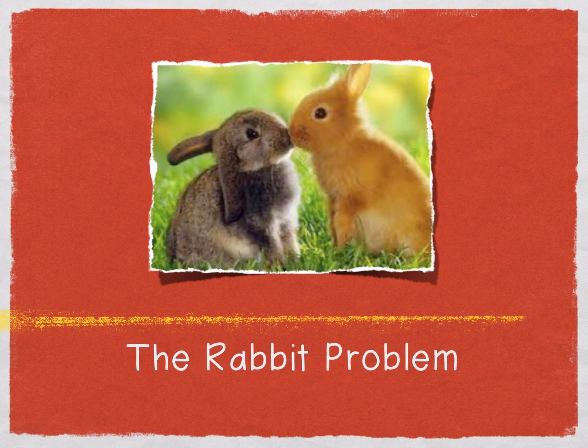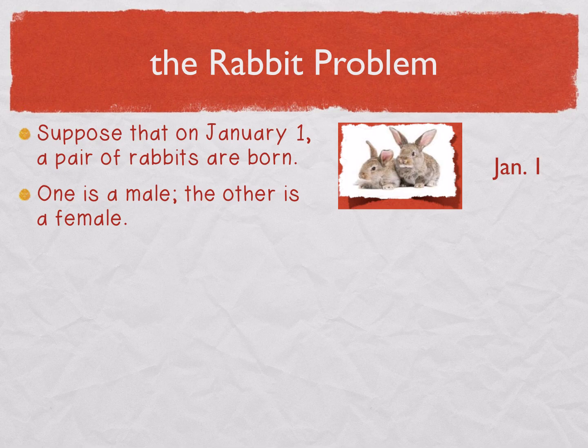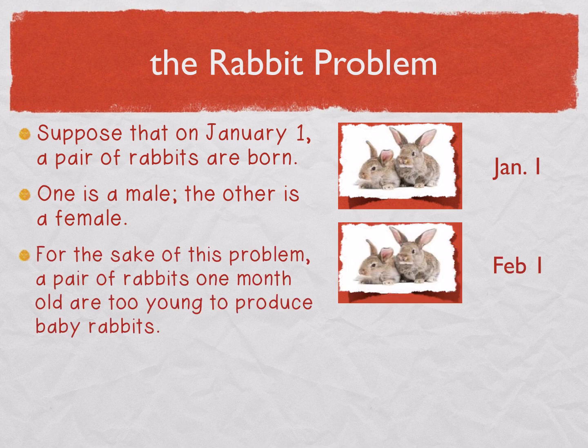Suppose that on January 1st, a pair of rabbits are just born — one is a male and the other is a female. For the sake of this problem, a pair of rabbits one month old are too young to produce baby rabbits. So if they're born on January 1st, then on February 1st they're exactly one month old, and they have not produced any baby rabbits.